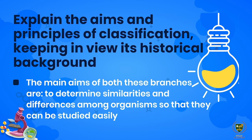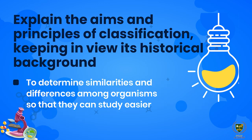The next statement is: Explain the aims and principles of classification keeping in view its historical background. We need to explain the importance of classification and keep its historical background in mind. The main aims of both these branches are to determine similarities and differences among organisms so that they can be studied easily. Classification divides organisms into different categories for in-depth study.